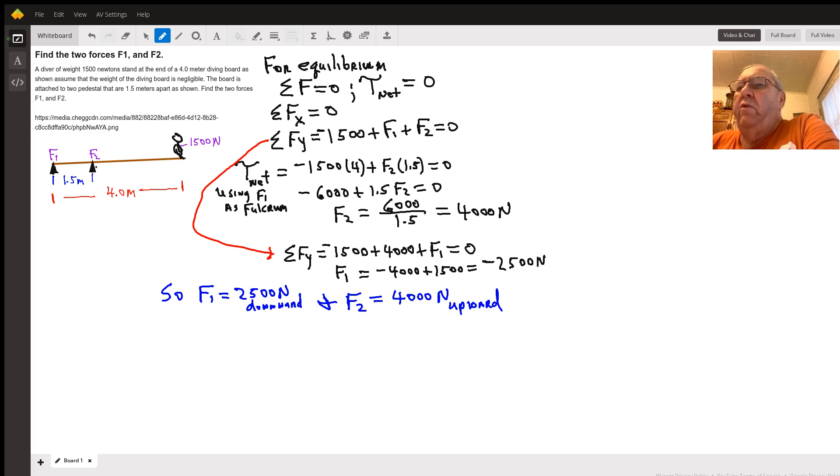Then we use our first condition that the sum of the forces have to be equal to zero in the y direction. Substituting in now our value for F2, 4,000, we find that F1 would be equal to negative 2,500 newtons, which means its force would be directed downward.